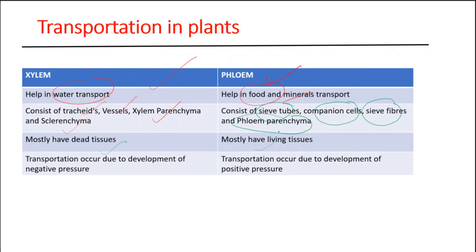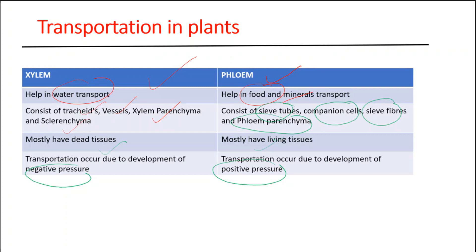Next, in xylem, transportation mainly occurs due to the development of negative pressure, and in phloem, transportation occurs due to positive pressure. Let us try to understand the phenomena of transportation in much more detail.